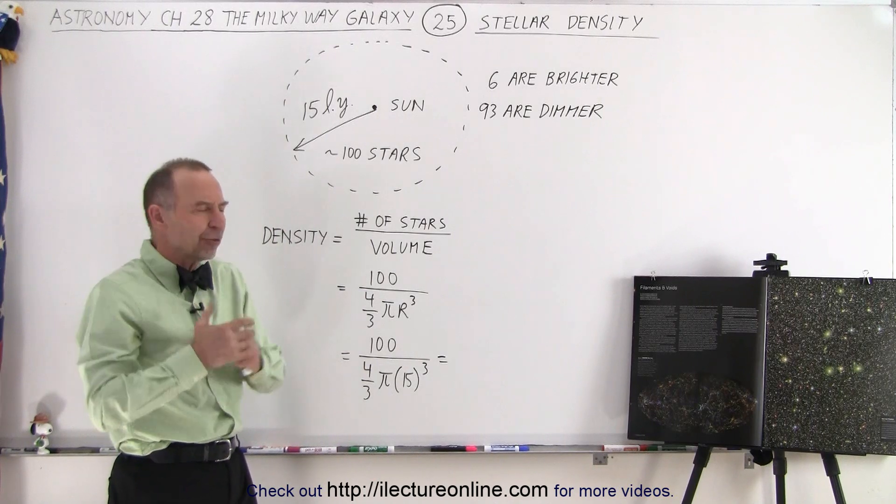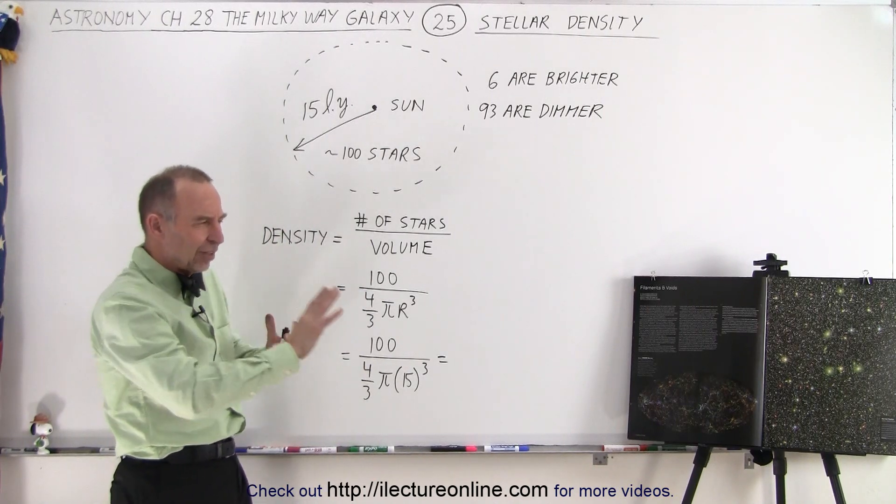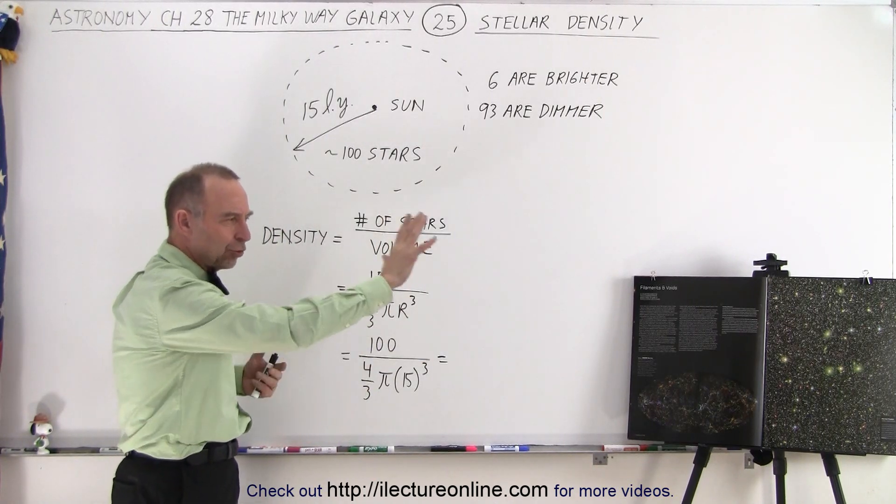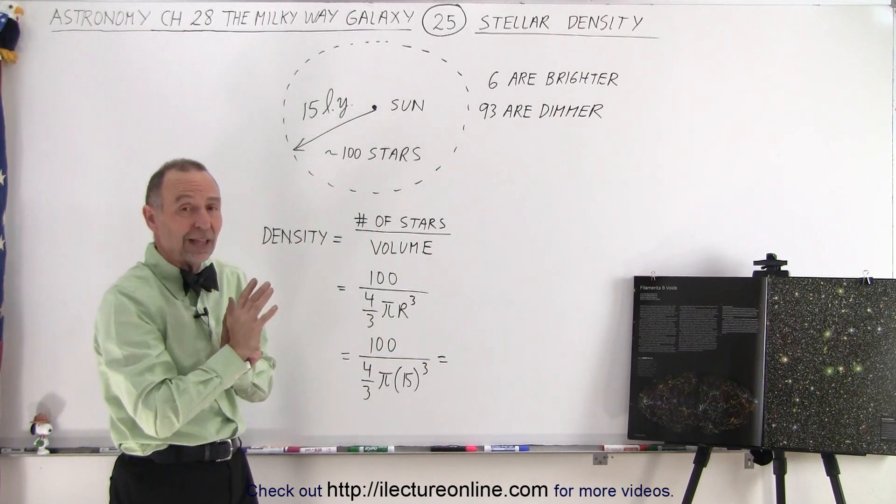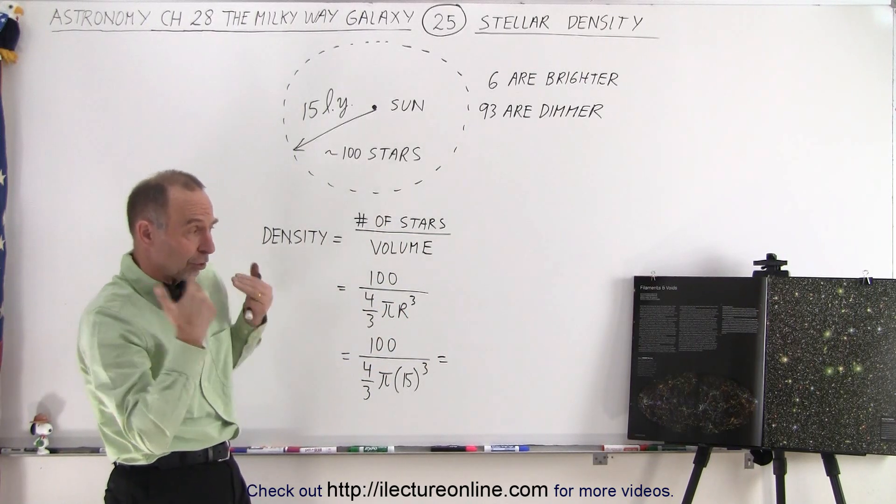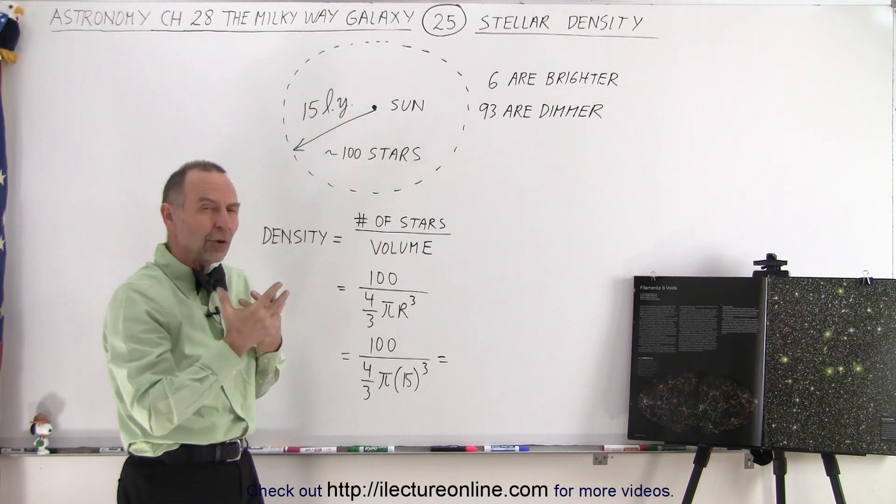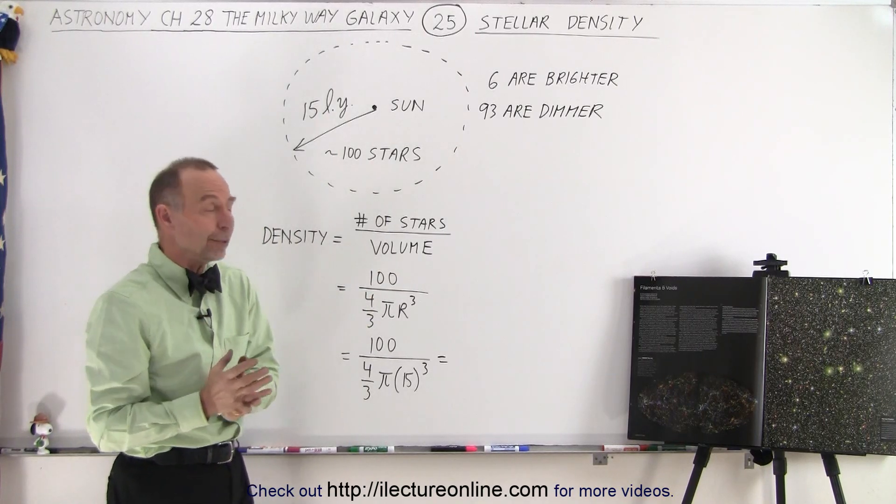So how dense are they? And of course this is a picture that makes it look like a two-dimensional picture, that all the stars are the same distance, but that's not the case. Some of the stars are close and other stars are far away. So how many stars are packed within a particular volume?